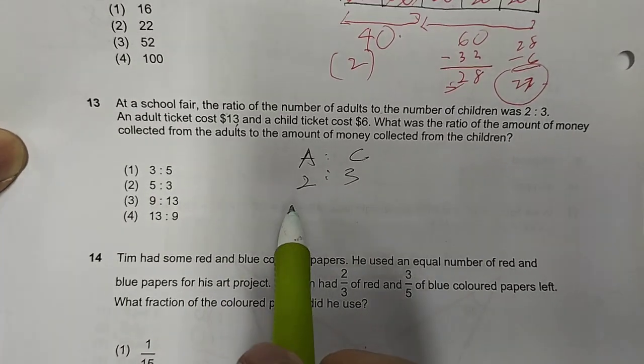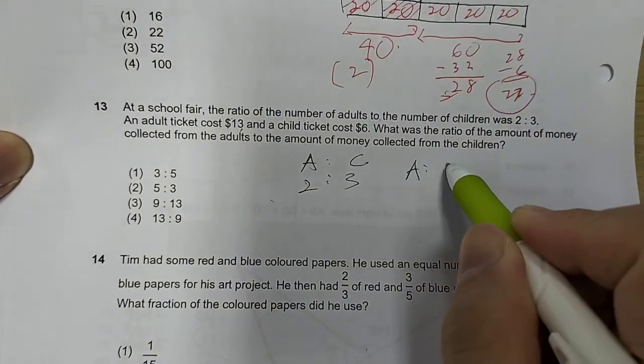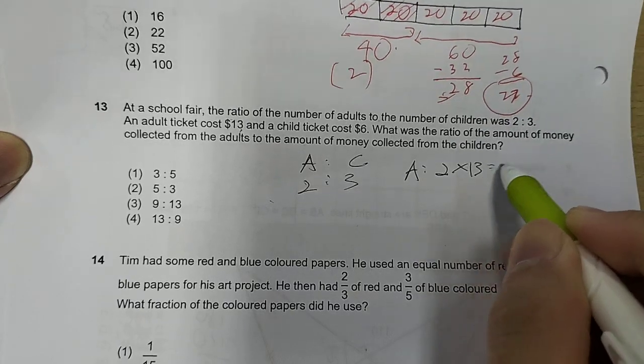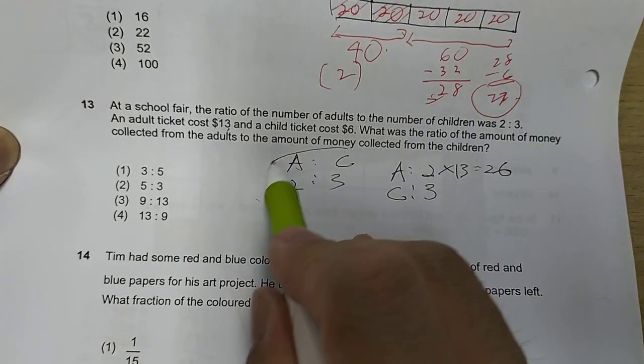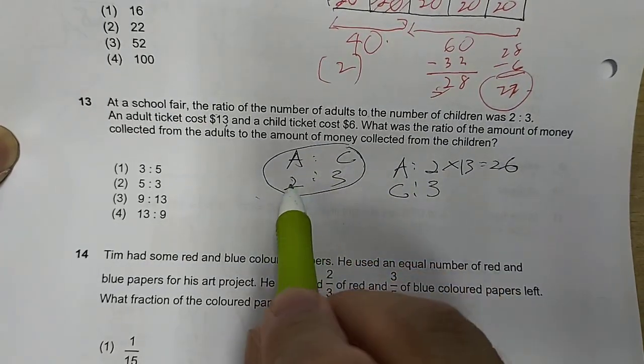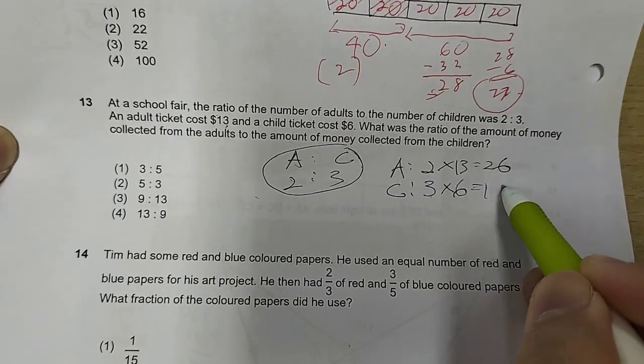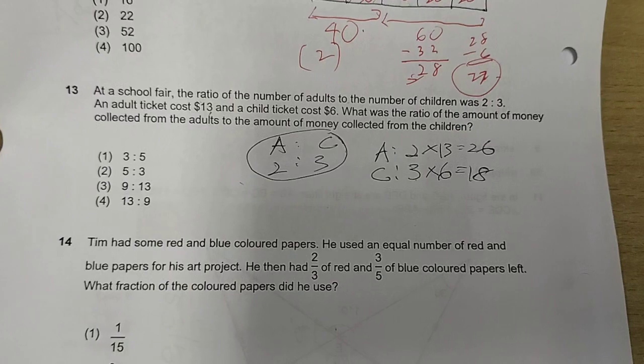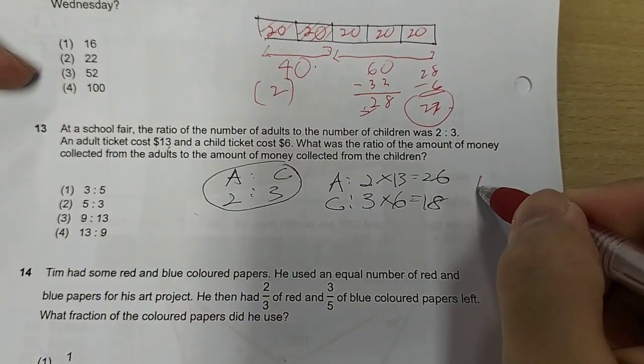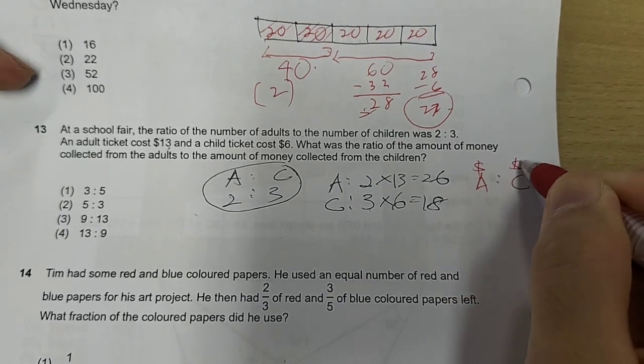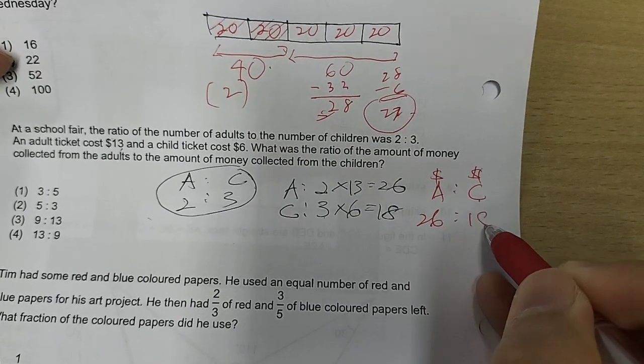So, assume that, let's say there are two adults. So, two adults will need to pay how much? Two adults, each one will pay $13, so you'll pay $26. For children, let's say there are three children in one group of these, two adults and three children. So, three children, each one pays $6, they'll be $18. So, you have to rewrite the ratio according to cost of the tickets. So, adult tickets versus children's tickets. Adults will have paid $26, and children will have paid $18.